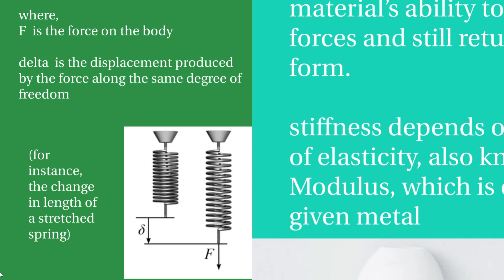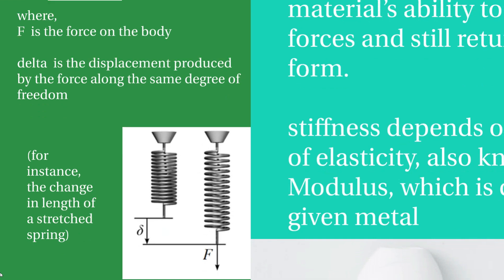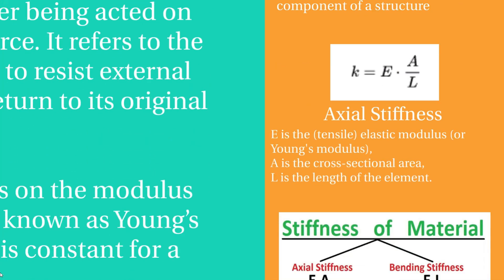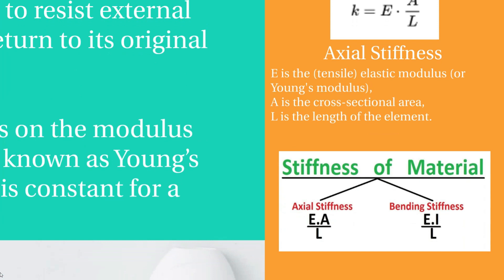Elastic modulus is a constant property of the material, but stiffness is a property of the structure or component. That means stiffness can be changed by changing the geometry of the component. For axial stiffness, the formula is k = EA / L, where E is the elastic modulus, A is the cross-sectional area, and L is the length of the element. For bending stiffness, k = EI / L, where I is the moment of inertia of the body.